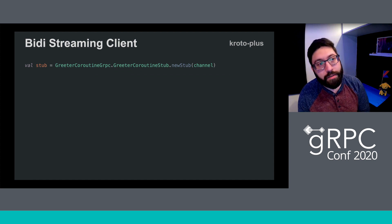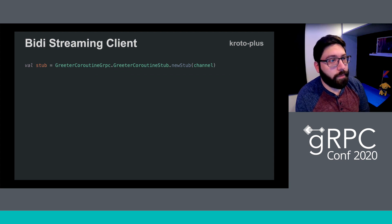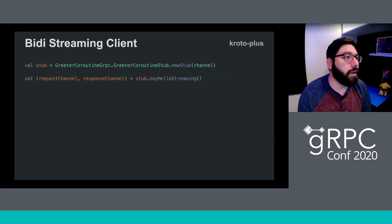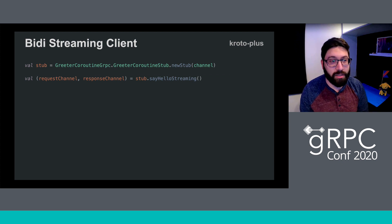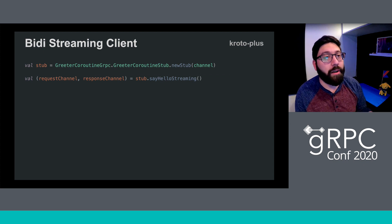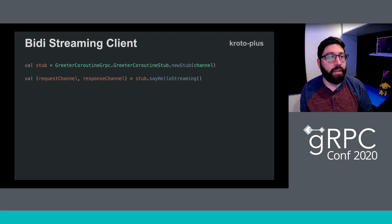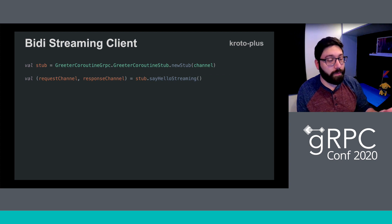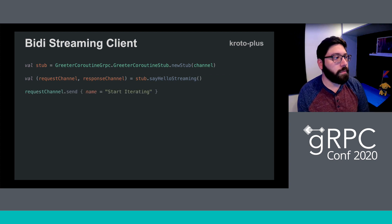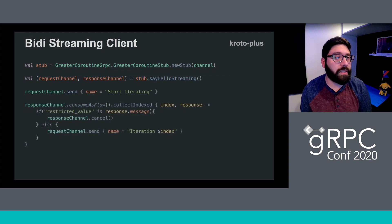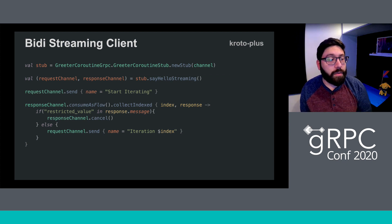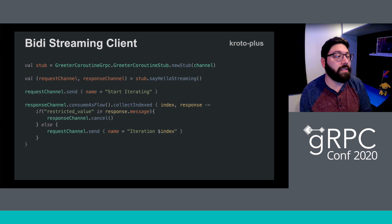On the client side of streaming APIs, we create our stub. When using KrotoPlus, invoking our streaming method returns a pair of two values — our request channel and response channel. We destructure those two values into their own separate variables to perform operations independently. In this example we kick off our stream with a message that says 'start iterating', then start consuming our responses, canceling the call if we receive an invalid response, or otherwise sending the next request using the KrotoPlus lambda builder to create our request message.